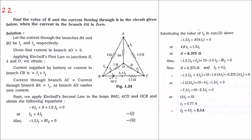Problem number 22: find the value of R and the current flowing through it in the circuit given below, when the current in branch OA is zero. So first we need to find R. From the figure we can see that the current flowing through R is i2, so we have to find R and i2.